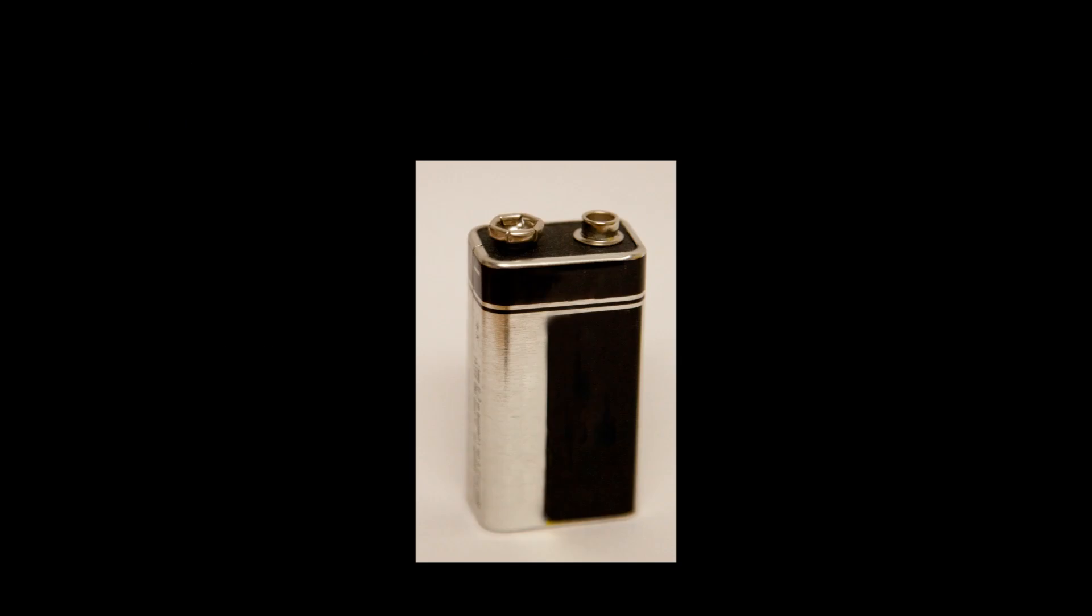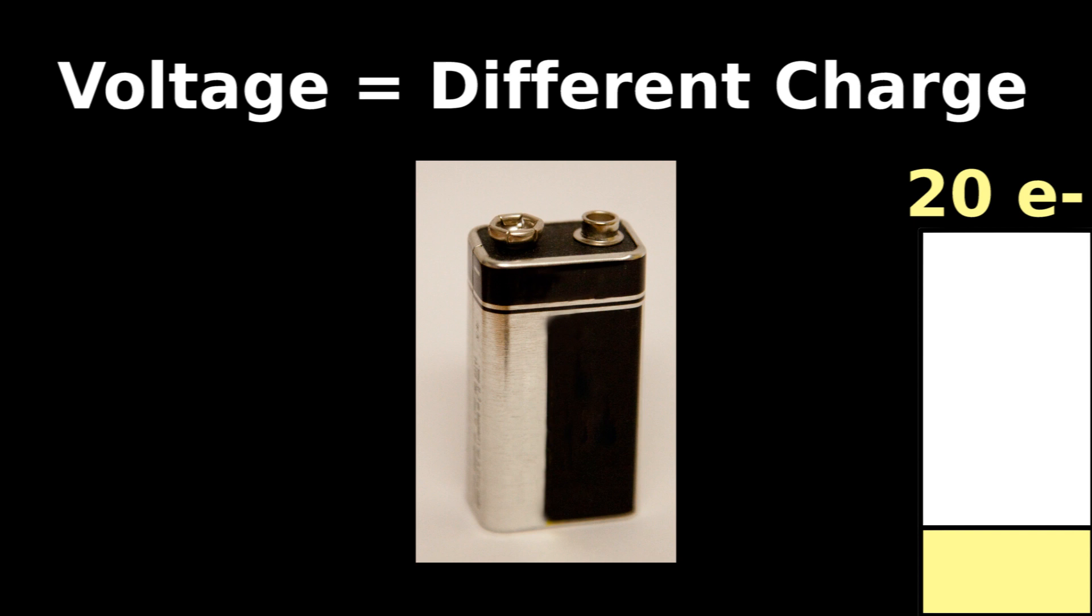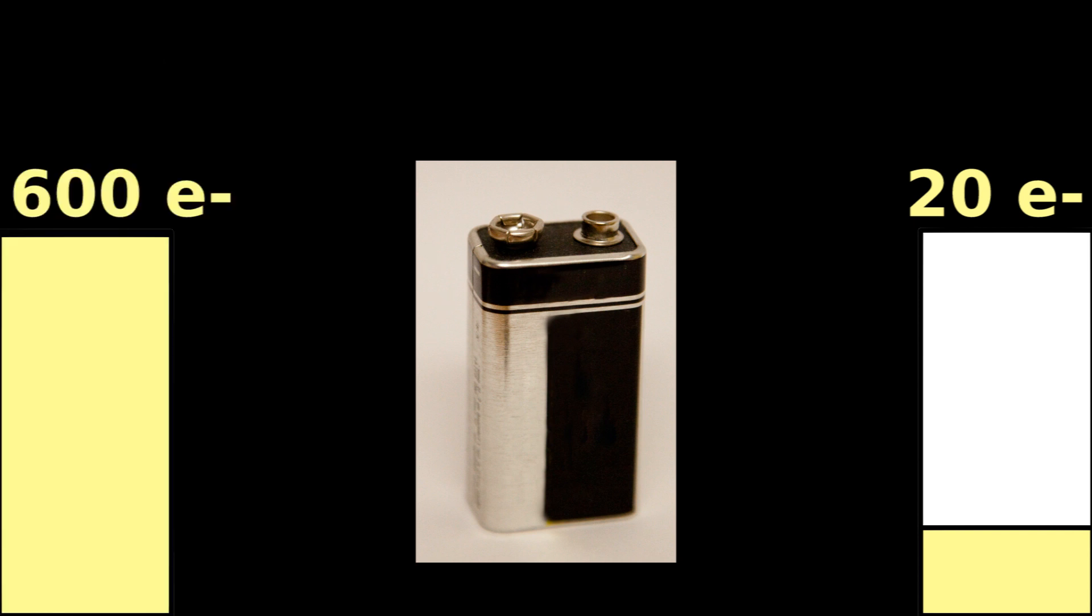Voltage means difference. In an electrical battery, there is a difference in charge. Let's say one side of the battery has 20 electrons, and the other side has 600 electrons.